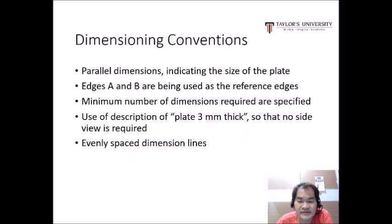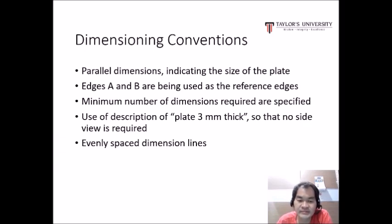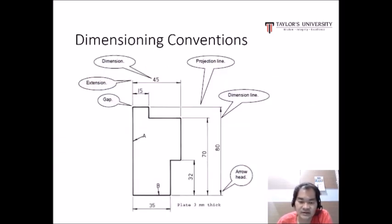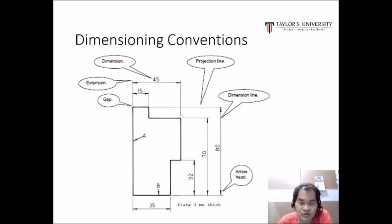Here is an example of parallel dimensioning indicating the size of a plate. Edges A and B are being used as the reference edges. The minimum number of dimensions required are specified, and a description of the plate as 3mm thick means no side view is required. The part has a constant cross section with evenly spaced dimension lines. The drawing shows gaps, extension lines, projection lines, dimension lines, and arrowheads.